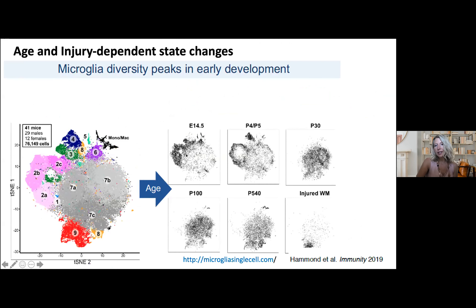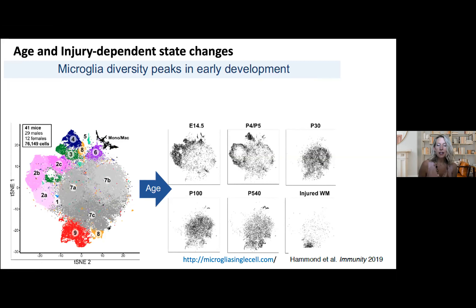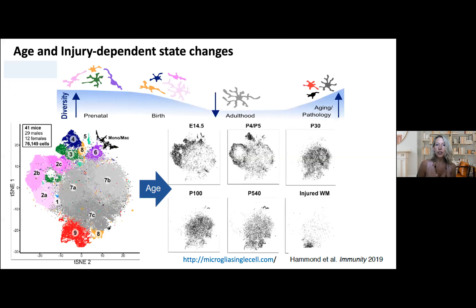By normal healthy adulthood, microglia resided largely in one big homeostatic state, but with aging, injury, and disease we observe clear shifts into different states. We've made a data portal where a lot of this data can be explored. Now groups are generating similar datasets not only in animal models but also in non-human primate models and human, and the goal is to integrate these datasets to understand which states are conserved and which are unique to different paradigms — connecting transcriptomic data to understand function.